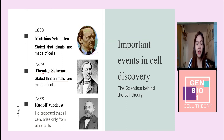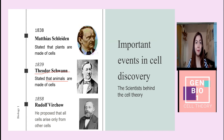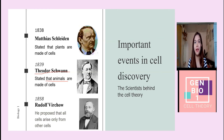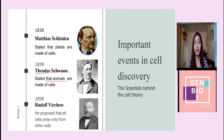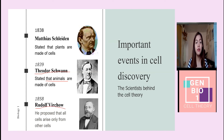However, one of Schwann's claims was that cells develop similarly to crystals, which aligned with the idea of spontaneous generation — the belief that cells could arise from non-living things. For example, if you left a piece of meat out and microorganisms appeared on it, they believed these arose spontaneously. This idea was later opposed by Rudolf Virchow in 1858, who stated that all cells arise only from other pre-existing cells, which is now the third postulate of cell theory.